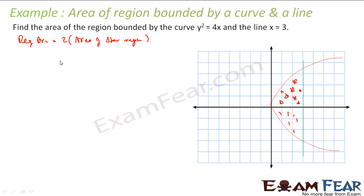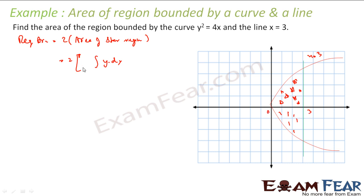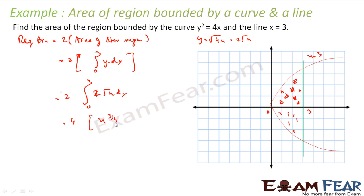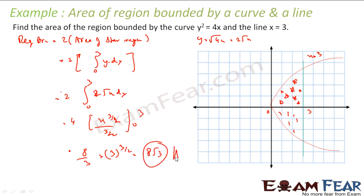The required area is 2 × area of the star region, since both halves are equal. Area of star region = ∫₀³ y dx. Here y = √(4x) = 2√x, so required area = 2 × ∫₀³ 2√x dx = 4 × [x^(3/2) / (3/2)] from 0 to 3 = (8/3) × 3^(3/2) = 8√3. A very simple question — draw the curve, draw the line, find the enclosed area as twice the upper half region.